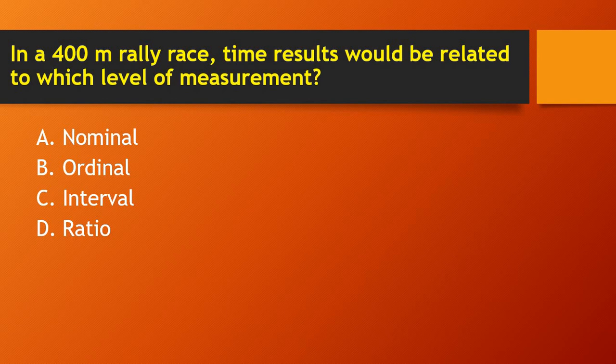Next question: in a 400-meter relay race, time results would be related to which level of measurement — nominal, ordinal, interval, or ratio? It is related to the ratio level of measurement.